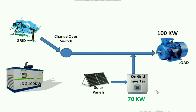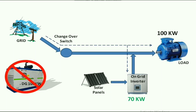When the load is getting supply from grid, the DG will be in off condition. When the grid is on, initially the power flows from grid to load and inverter, so the overall 100 kW load will be supplied by the grid. But when the on-grid inverter gets supply, it starts generating power from solar and begins sharing the load, supplying 70 kW from the solar inverter.